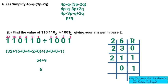Now we copy the answer from the remainders, reading from the bottom upward. Starting from the bottom: 1, then 1, then 0. So the answer is 110 in base 2. Therefore, 110110 base 2 divided by 1001 base 2 equals 110 base 2.